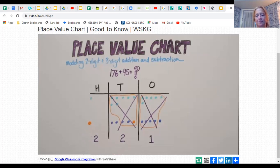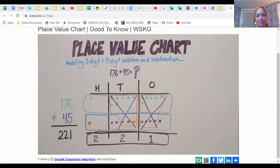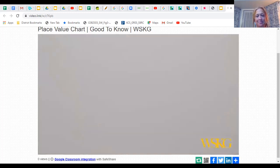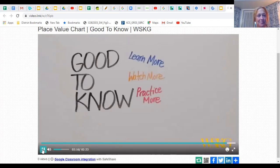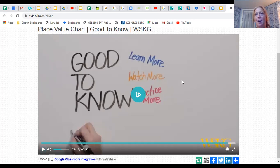Look, we just showed why 176 plus 45 equals 221. If you look closely, a place value chart is a helpful tool to use before your child uses the standard algorithm. The place value chart teaches your child why the standard algorithm works. How powerful. And that's good to know.